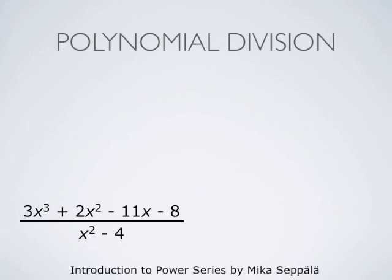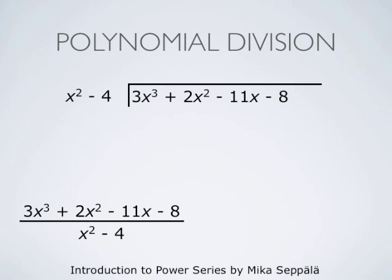To start with, I will show an easy way to find power series expansions for rational functions. In order to do that, I remind you first of the long polynomial division. Consider the rational function 3x³ + 2x² − 11x − 8, divided by x² − 4. The degree of the denominator 2 is less than that of the numerator, which is 3. Therefore we may perform the division. We do that by writing the denominator x² − 4 to the left of the numerator as shown here.